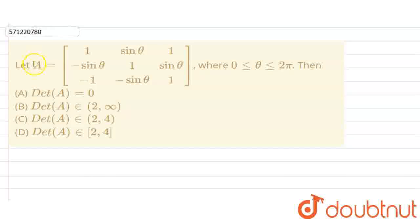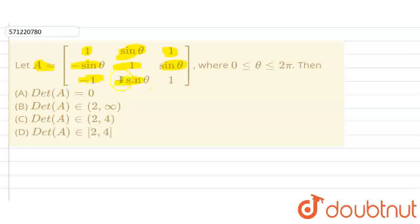Hello everyone. The question is: let A be the matrix with elements 1, sin θ, 1; minus sin θ, 1, sin θ; minus 1, minus sin θ, 1, where θ is greater than or equal to 0 and less than or equal to 2π. We have to find which of the given options are correct.